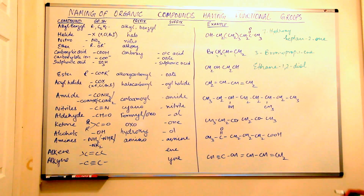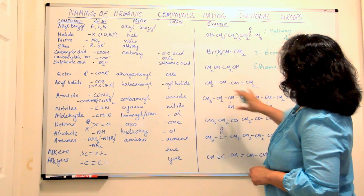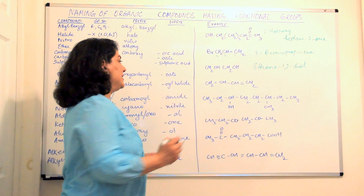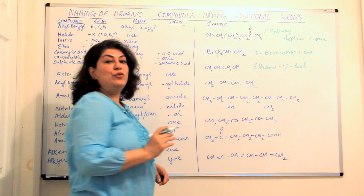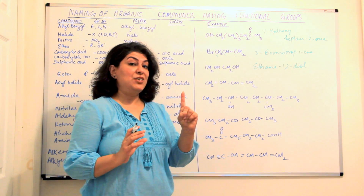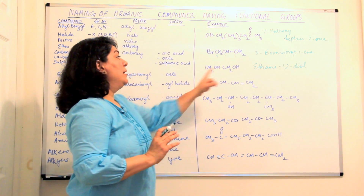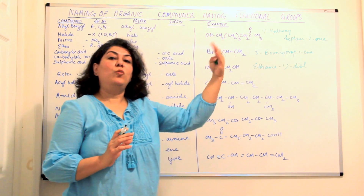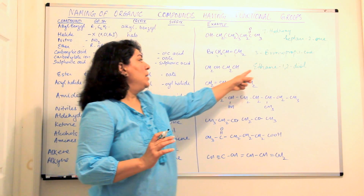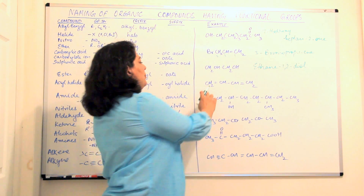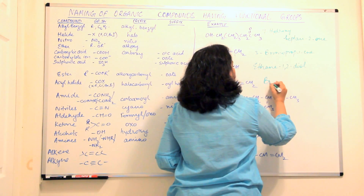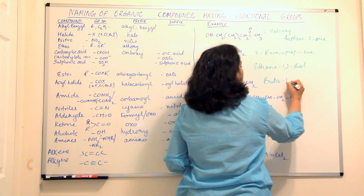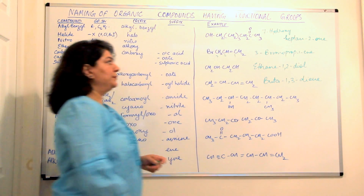The next compound has two points of unsaturation — two enes. Counting carbons: one, two, three, four — it is butane, but since it has unsaturation it becomes buta-. When there are two repeated unsaturations, we cannot write just 'ene,' so we write 'diene.' The unsaturation is at positions one and three, giving us buta-1,3-diene.